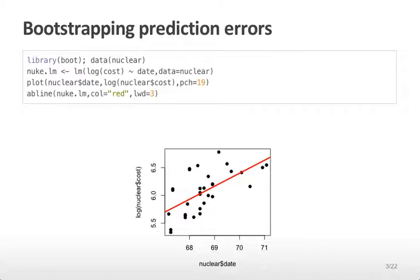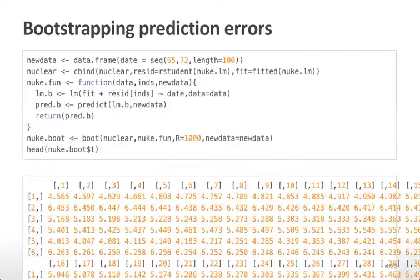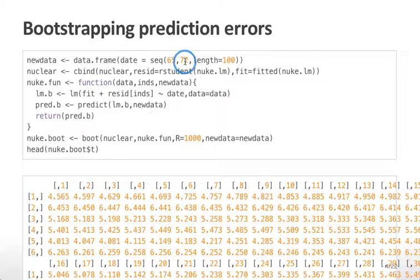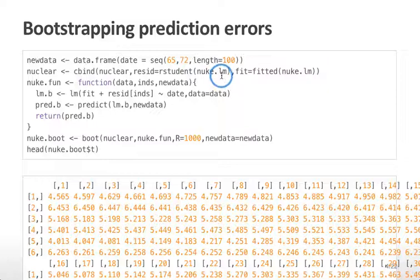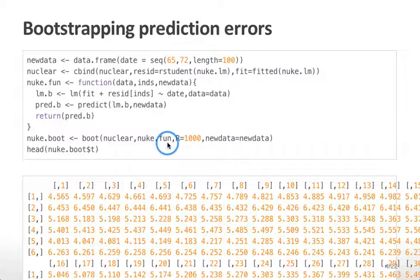One thing we might want to know is, if we make a new prediction, how confident we would be in that prediction. We can generate a new set of values equal to the predictions that happen for specific dates. Here we'll use dates between 65 and 72, creating a sequence of 100 equally spaced values. We then attach to the nuclear dataset the residual values and fitted values from the nuclear regression model, and use the bootstrap function with 1,000 replications, passing this new dataset as an extra argument.